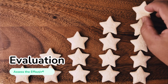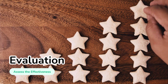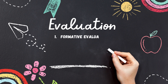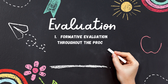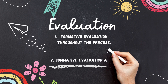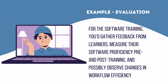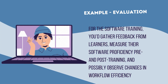Five: Evaluation — assess the effectiveness. Evaluation happens in two stages: formative evaluation throughout the process and summative evaluation at the end. Technology enables the collection of extensive data on learner performance and engagement, helping to refine the instruction. For the software training, you'd gather feedback through surveys, measure understanding via quizzes, and possibly observe changes in workflow efficiency.